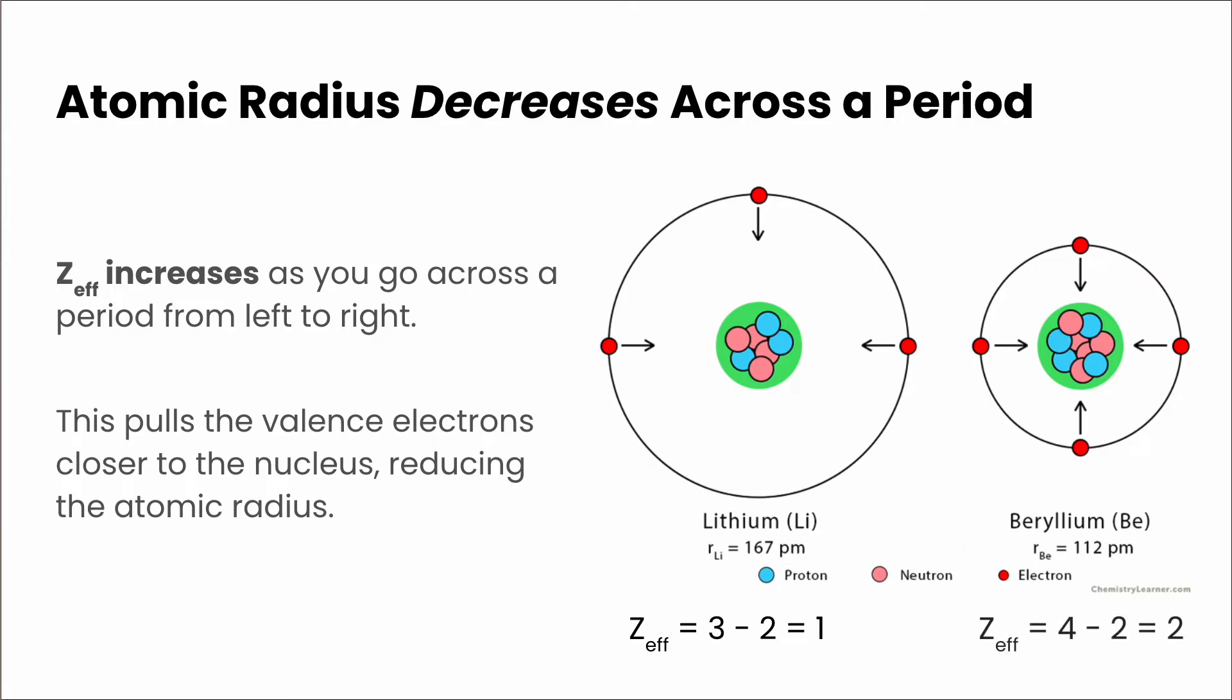Whereas if we look at beryllium, it's now atomic number four, two inner electrons, two in the valence shell. So four minus two is going to give us an effective nuclear charge of two. So it's increasing as we go across the period, which is going to then pull the valence electrons closer to the nucleus, reducing the atomic radius.